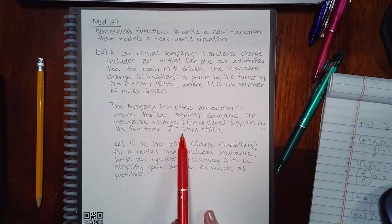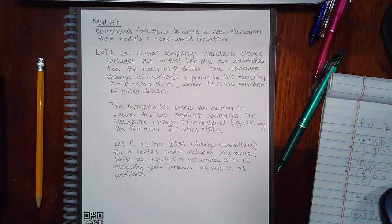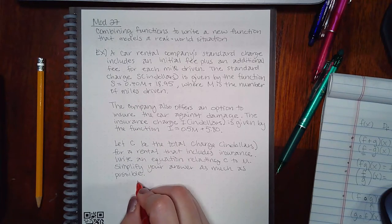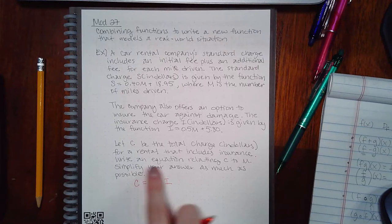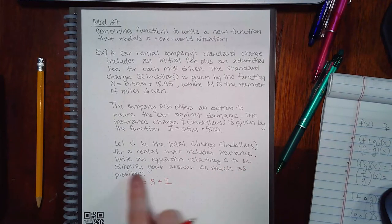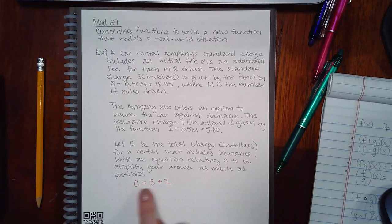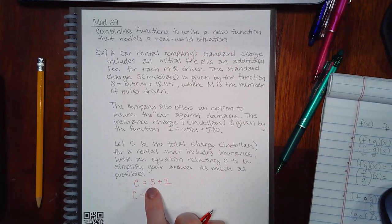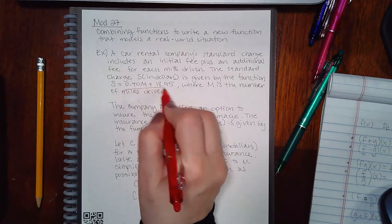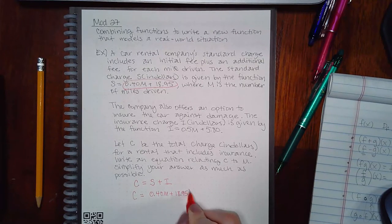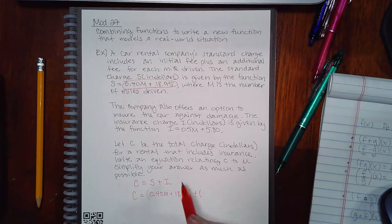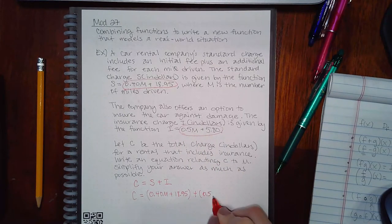Let C be the total charge in dollars for a rental that includes insurance. So if this is the cost for the insurance, this is the cost for the rental, how do you figure out the total cost? What you do is you take the cost of the rental and you add the insurance. But it wants me to write an equation relating C to M, simplifying your answer as much as possible, which means the only variables they want in the equation are C and M. And I have S and I, so I cannot use these letters here. But what I can do is use the expressions that represent these letters. So S is equivalent to this. So I'm going to plug in that for S. And then I have an expression for I, which is this, and I'm going to plug that in for I.